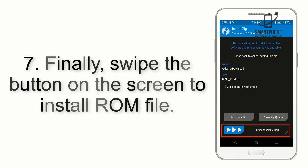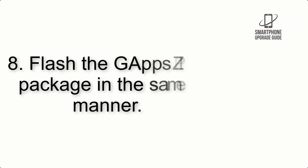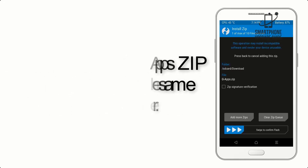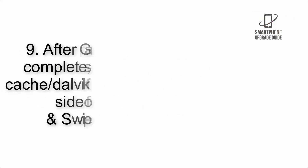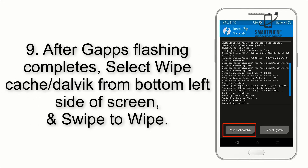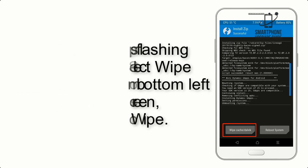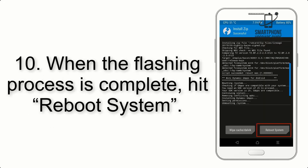Step 8: Flash the GApps zip package in the same manner. Step 9: After GApps flashing completes, select Wipe Cache and Dalvik from the bottom left side of the screen and swipe to wipe. Step 10: When the flashing process is complete, hit Reboot System.